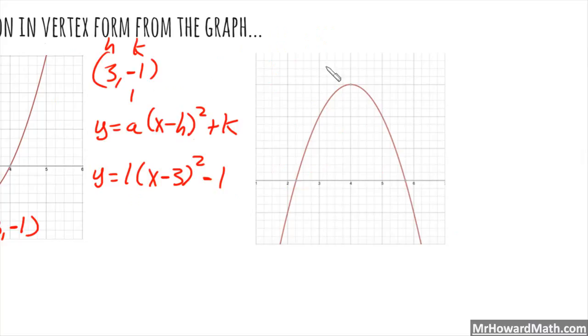Now we have a second example. We were asked to write it in vertex form. So first we identify the vertex. The vertex here is 4, 3. So you read that right off the graph, 4, 3. So that means that's h, that is k.